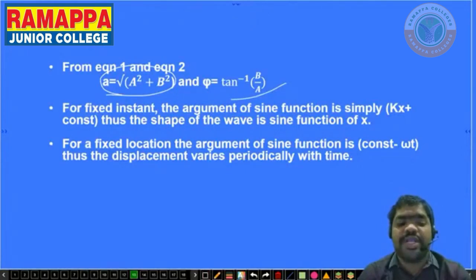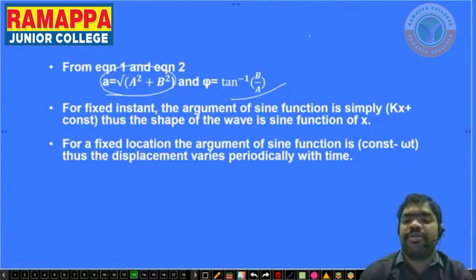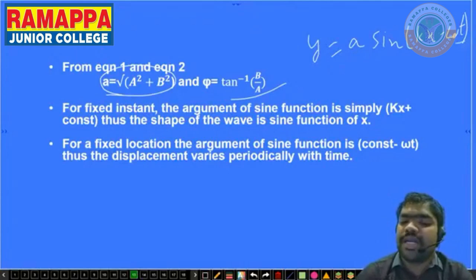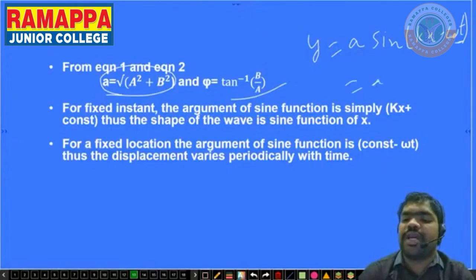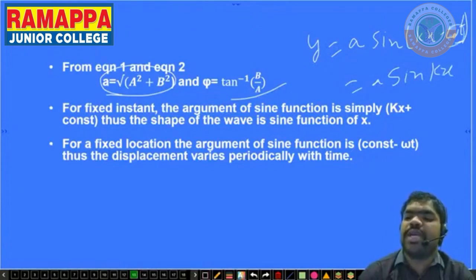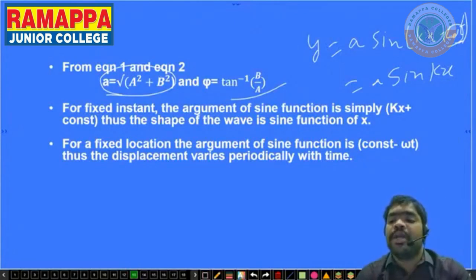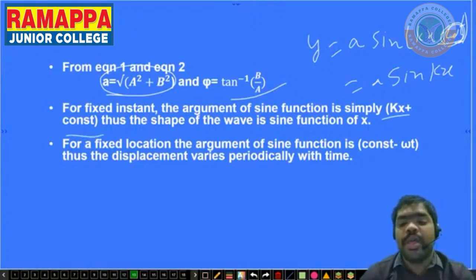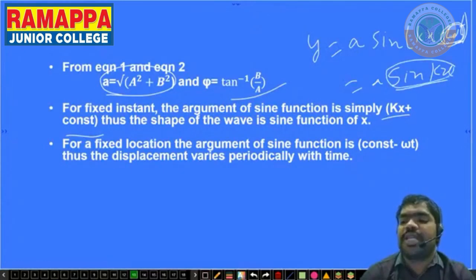For a fixed instant, t is constant. When we place t as constant in the equation y = A sin(kx − ωt), the omega-t term becomes a constant. Then the equation becomes y = A sin(kx). This means for a fixed instant in time, the displacement depends only on position x.